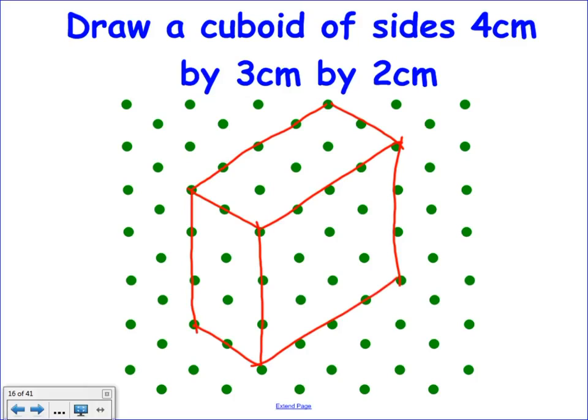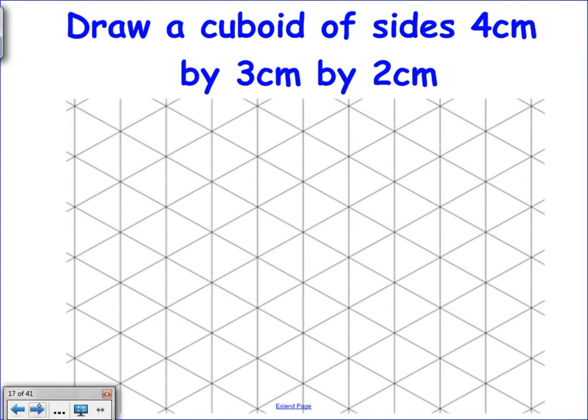It's the same shape, but you're looking at it from a different aspect. So before, we looked at the 4 by 3, and that was in the top. So it doesn't really matter which two dimensions you go for first as your top. So let's try that with the triangles then.